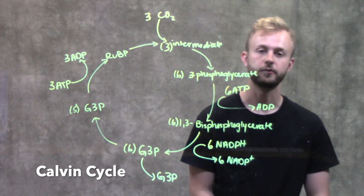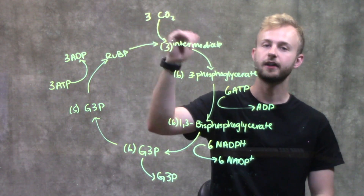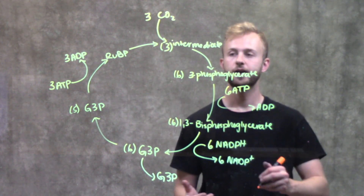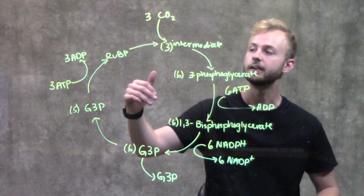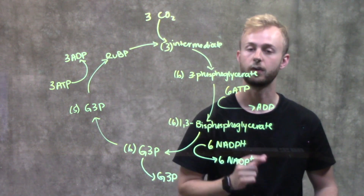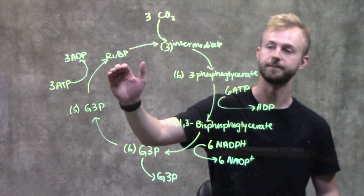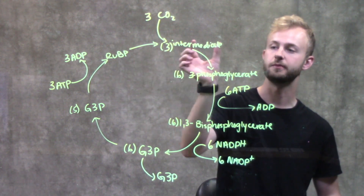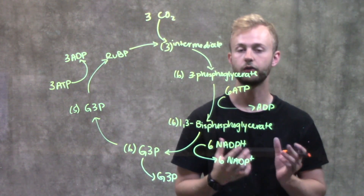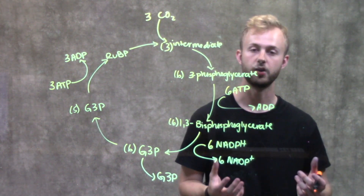This video is going to be about the Calvin Cycle. The thing that we put into the Calvin Cycle is our carbon dioxide. Carbon dioxide is going to come in and get attached to a 5-carbon sugar called ribulose bisphosphate, which we have right here as RuBP. They'll join to make a 6-carbon intermediate that's very unstable and quickly breaks apart into 2 three-carbon molecules.